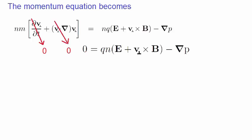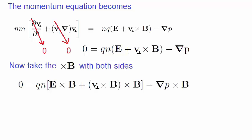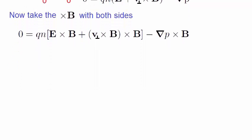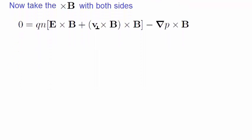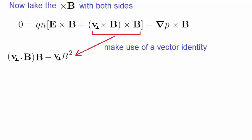In order to solve for V-perp in a simple way, we'll take the cross product of both sides with the magnetic field. We notice that this vector triple product can be simplified by making use of a vector identity that you can find in every vector calculus book. In this case, it simplifies to this. Notice that the dot product between V-perp and the magnetic field must be zero because they are at right angles to each other. So now this expression simplifies to this.